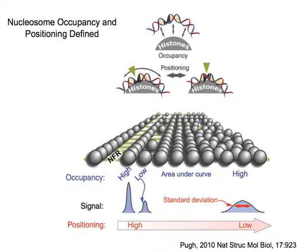The most important concept here from nucleosome positioning is to understand occupancy and positioning and how they're different. This graph does a good job of showing this. He calls it a nucleosome-free region here — I prefer the nucleosome-depleted region. The plus-one nucleosome is both well-positioned — it's relatively the same distance from the transcription start site every time — and it's relatively well-occupied, which means there's almost always a nucleosome there and it's almost always in the same relative position.